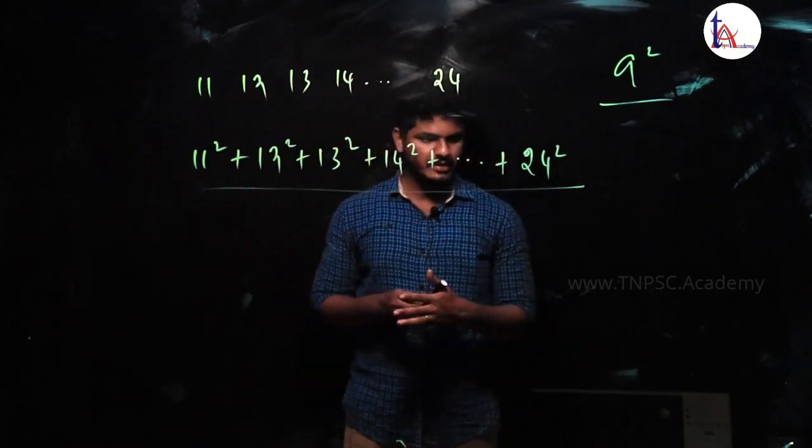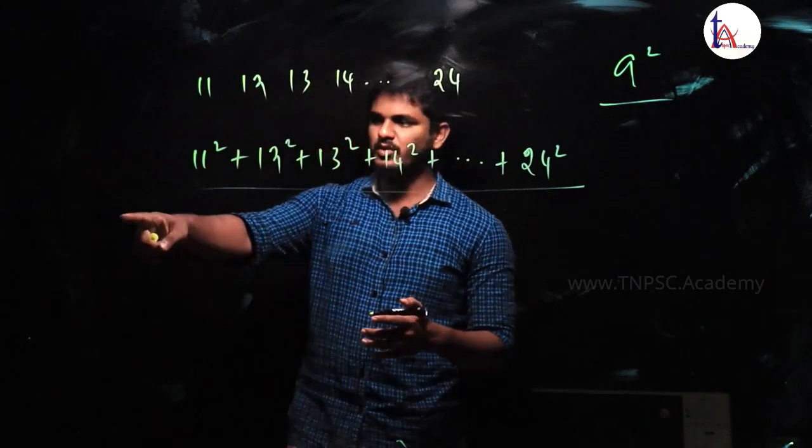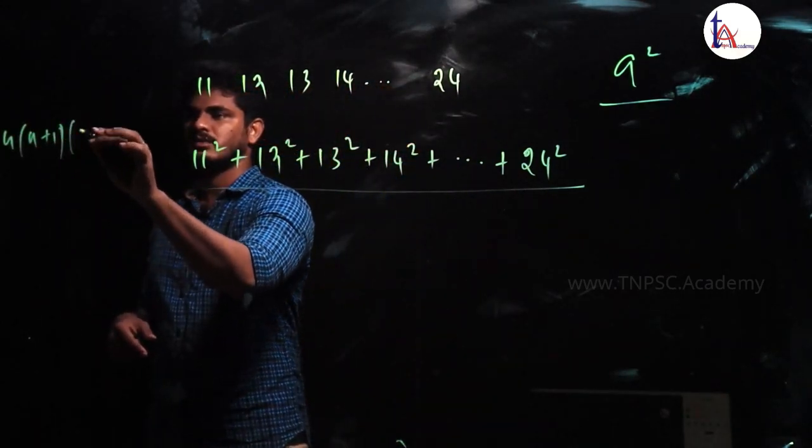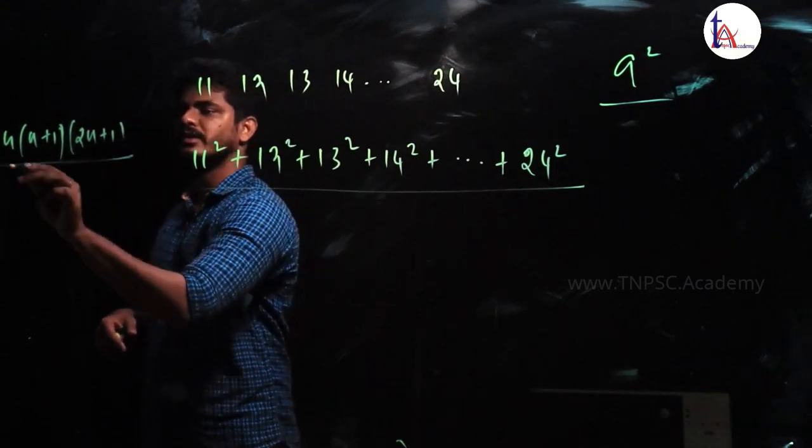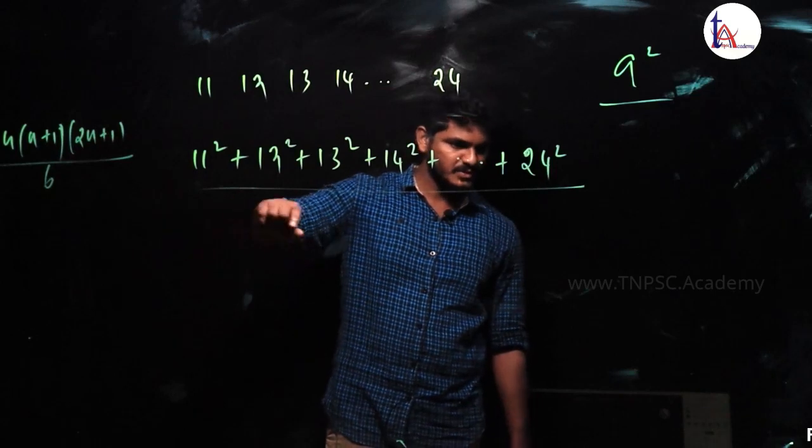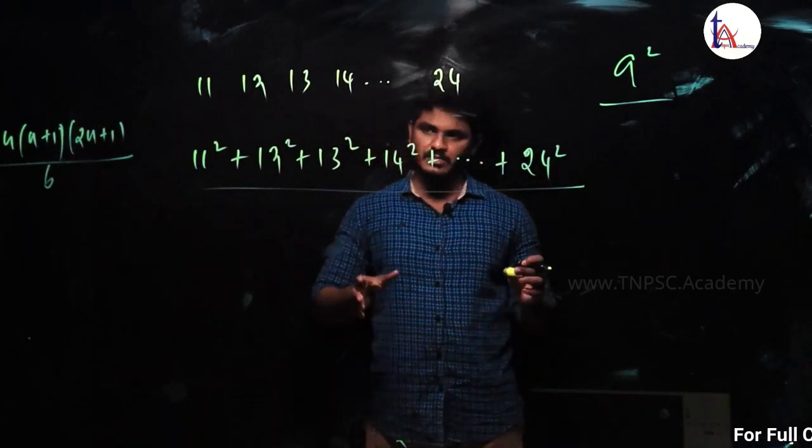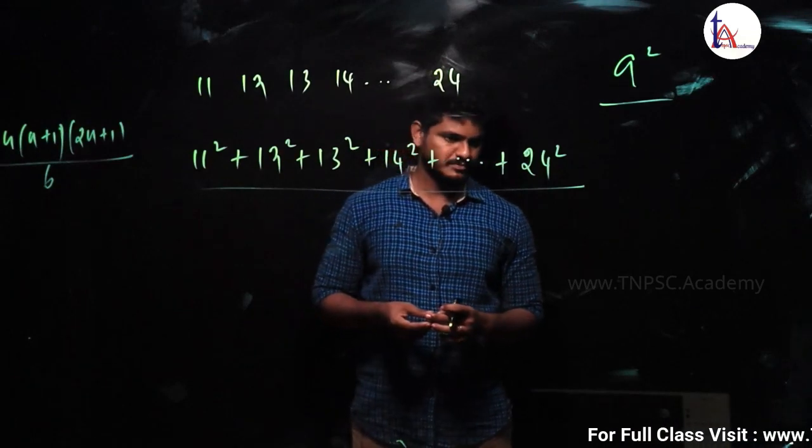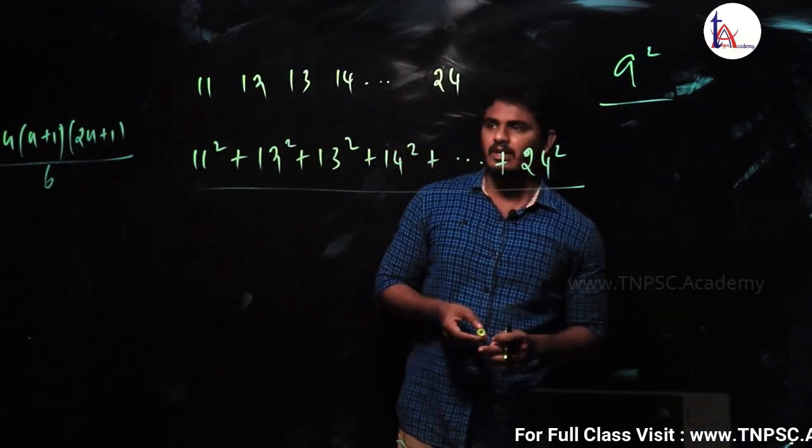So once again, the same formula: n into n plus 1 into 2n plus 1 divided by 6. That is the same formula, 4515, there is no problem, I will tell you. Okay, so what do we do?